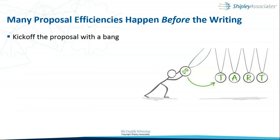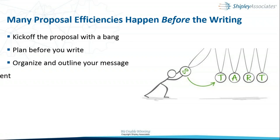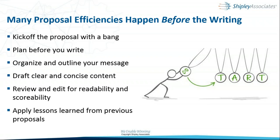As far as proposal efficiencies, one of the things we talk about is making sure we're planning before we're ready. A lot of inefficiency happens because we fail to plan. We want to talk about kickoff meetings — how do we be effective on the front end? Plan before we write, organize, draft clear content. This planning phase of a proposal is really where we lose a lot of efficiency.